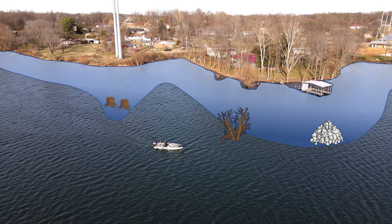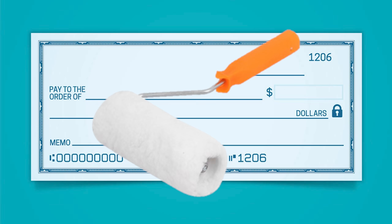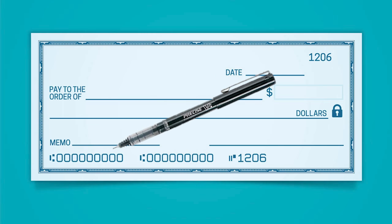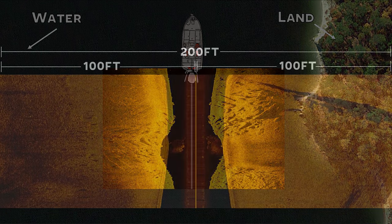This is the main application of side imaging — to identify those hidden pieces of structure and cover out in the middle of the lake. However, a lot of anglers try to use side imaging to find fish, and this is like trying to sign a check with a paint roller. A paint roller is great for applying a lot of paint over a large area, but a pen is a lot better tool for trying to sign your signature. In the same way, side imaging is a great tool for scanning a large amount of water quickly to identify key pieces of structure and cover that you should fish.